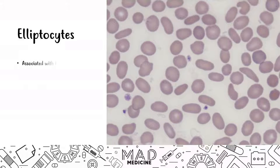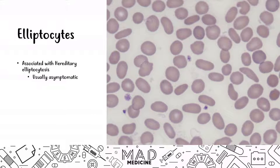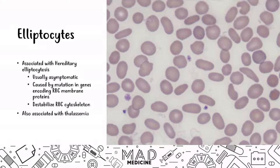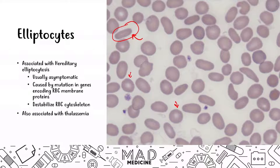Elliptocytes are associated with hereditary elliptocytosis, which is usually asymptomatic and doesn't carry any sort of issue for the patient. This is caused by mutations in genes that encode the red blood cell membrane proteins, leading to destabilization of the cytoskeleton. Elliptocytes are also associated with thalassemia. As the name says, it's an elliptical shape of a red blood cell.